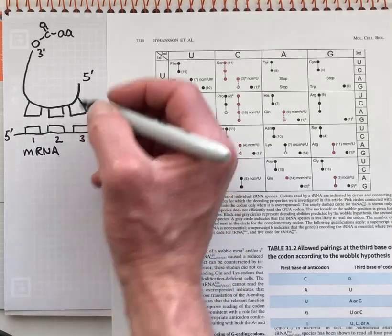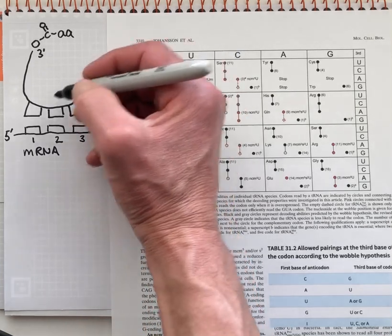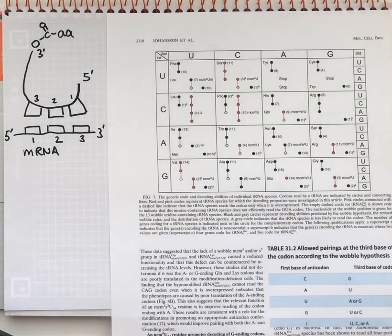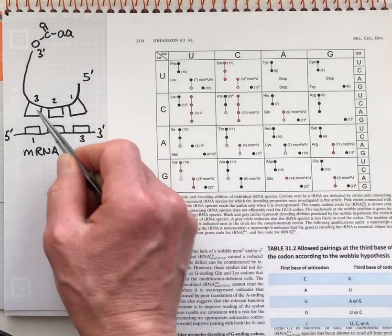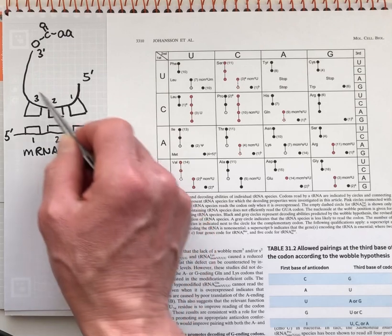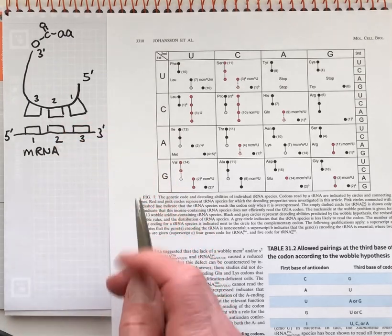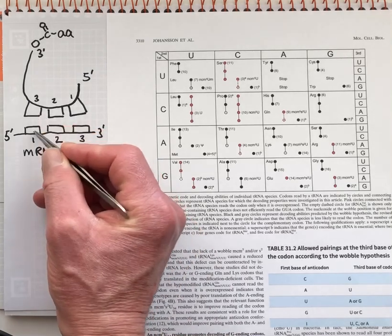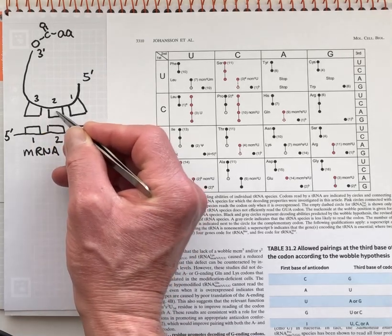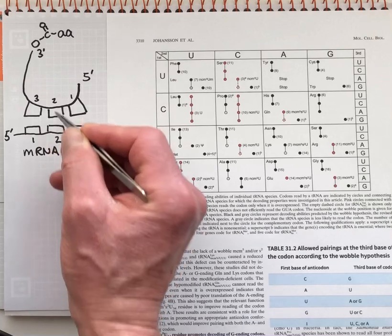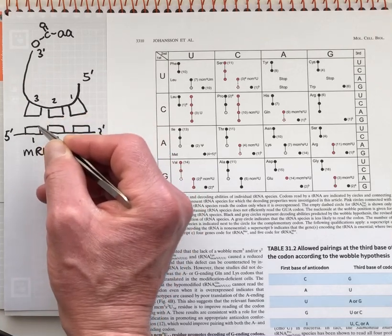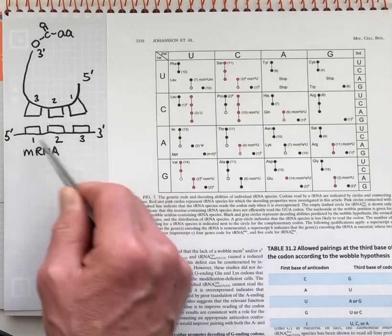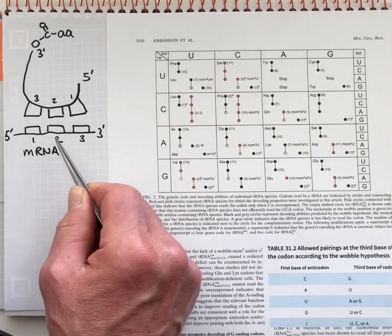The anticodons are, this is the first position, the second position and the third position. And at the first and second position, we can expect precise Watson and Crick type base pairs, meaning U is going to base pair with A and G is going to base pair with C or C will base pair with G and U with A. There's no ambiguity as to the nucleotide identity at these two positions.